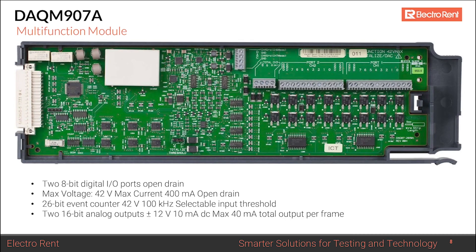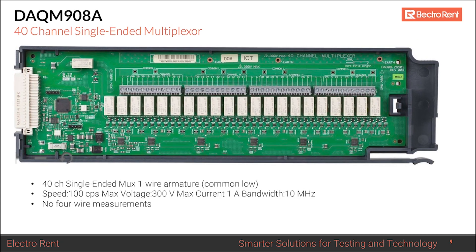The DAQM907A is the multi-function module, similar to the legacy 34907A. It features two 8-bit digital ports for input and output at up to 42 volts, useful for measuring sensor and actuator status. It also includes a 26-bit event counter with 42-volt input and approximately 100 kHz bandwidth, plus two analog outputs at plus and minus 12 volts and a current output of 40 milliamps — capable of driving 4–20 mA current outputs.